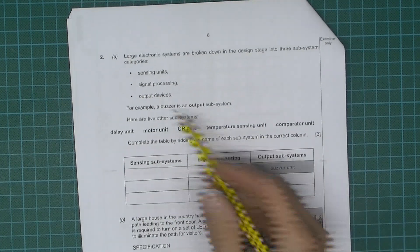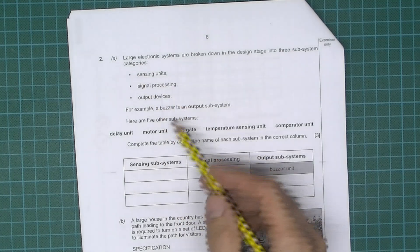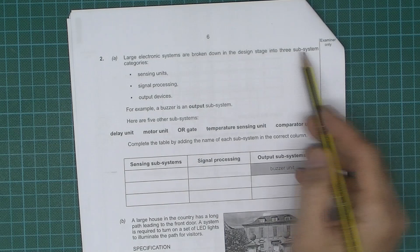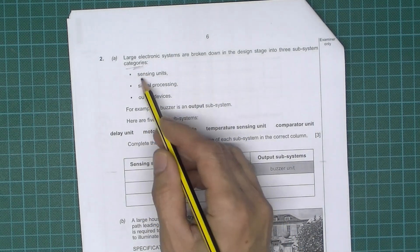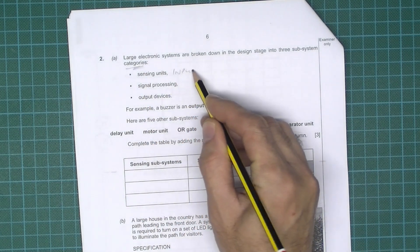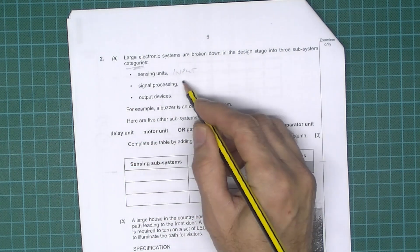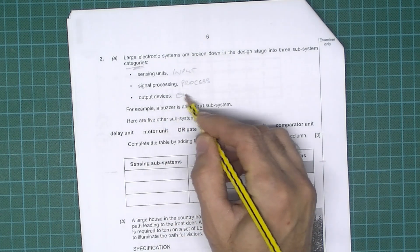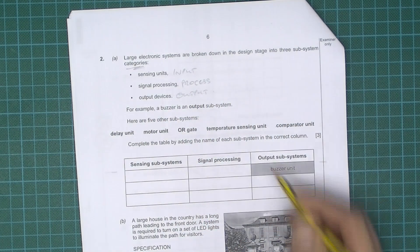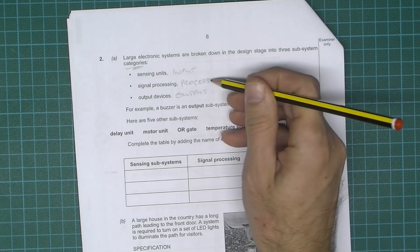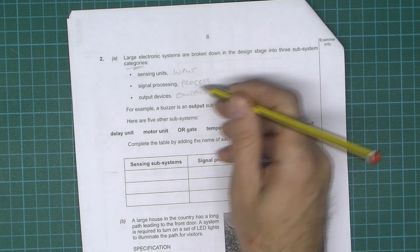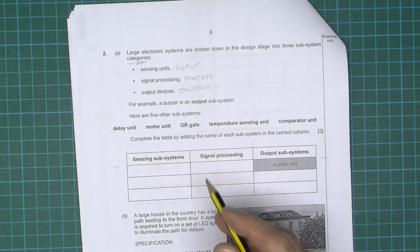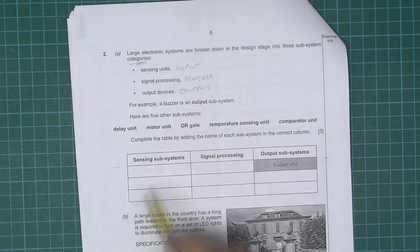We've got a table to complete here and this first bit is just information. Large electronic systems are broken down in the design stage into three subsystem categories: sensing units, in other words input, signal processing which we frequently just talk about being process, and output devices. So like switch and microcontroller or logic gate or whatever happens to be. An output device is a lamp, for example. So for example, a buzzer is an output subsystem.